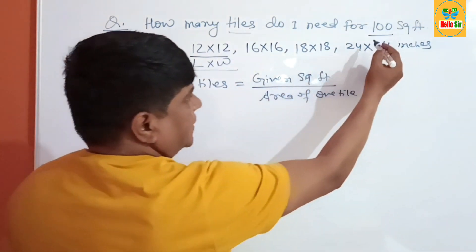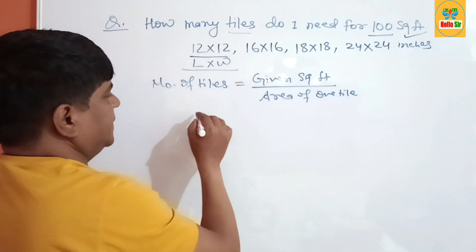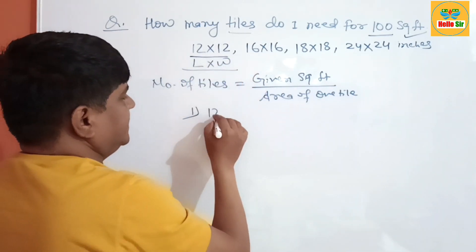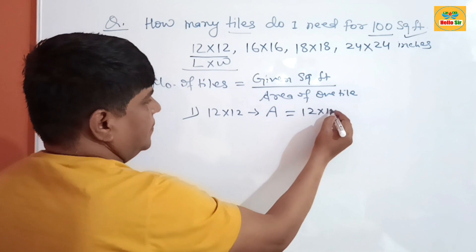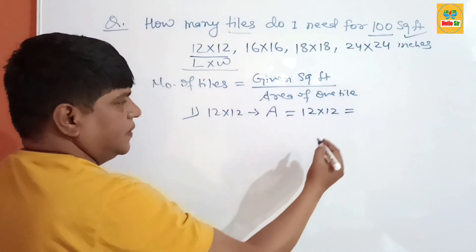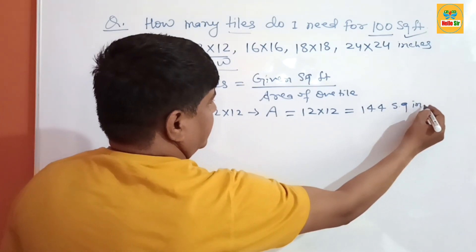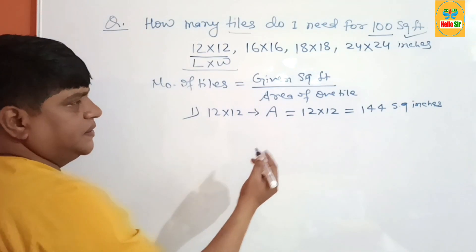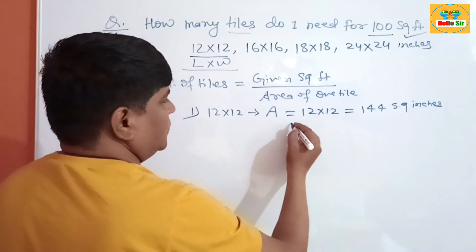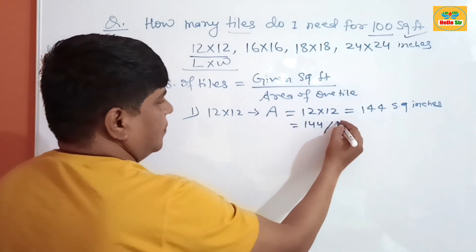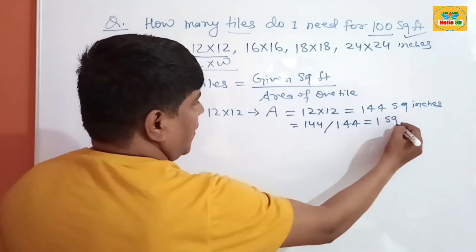The given square footage is 100 square feet, and you have to calculate the area of one tile. Suppose the first one: the 12-inch tile. Its area is calculated by multiplying both figures — 12 into 12 — which gives 144 square inches. If you want to convert 144 square inches to square feet, you should divide 144 by 144.